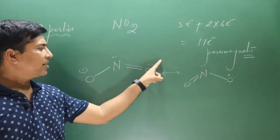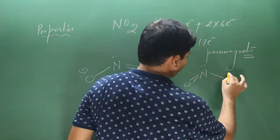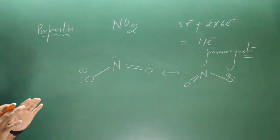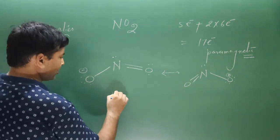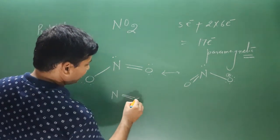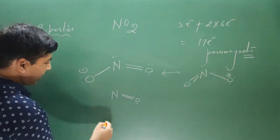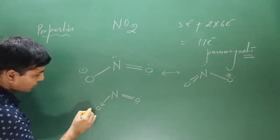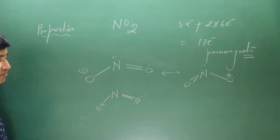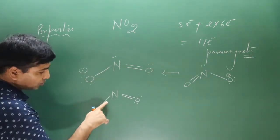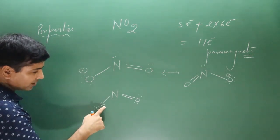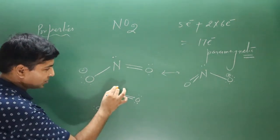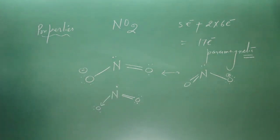Electron density pulls toward one oxygen (negative charge). If we show the coordinate bond, nitrogen has a double bond with one oxygen and donates its lone pair to the other oxygen. Nitrogen uses two electrons on each side and is left with only one electron — acting as a free radical.